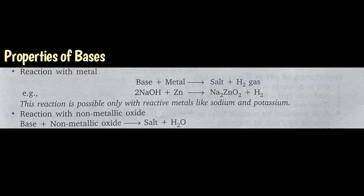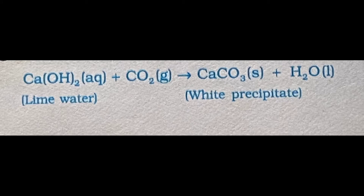Now let us see the properties of base. When base reacts with metal, salt of the metal is formed and hydrogen gas is liberated. So: base + metal → salt + hydrogen. For example, when sodium hydroxide reacts with zinc, sodium zincate is formed and hydrogen gas is liberated. This reaction is possible only with reactive metals like sodium and potassium, not with less reactive metals. Another property is reaction with non-metallic oxide. When base reacts with non-metallic oxide, salt and water are formed. For example, calcium hydroxide reacting with carbon dioxide (a non-metallic oxide) produces calcium carbonate (salt) and water.